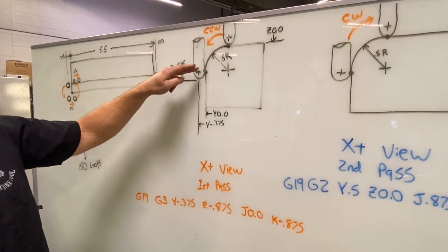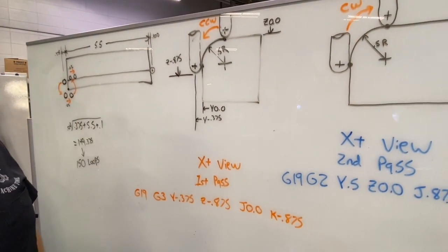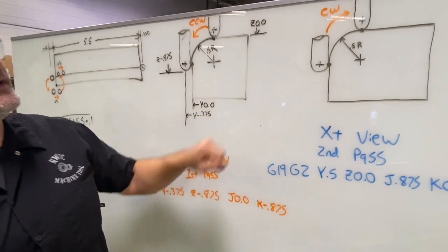So that's going to be our first pass. Then we're going to step over our incremental amount in X of 20 thousandths, then we're going to look at our second pass.